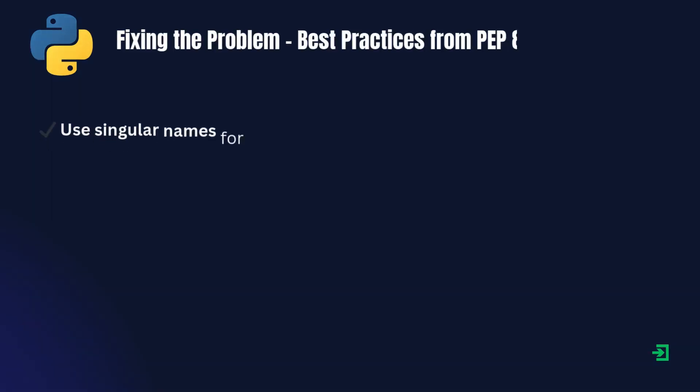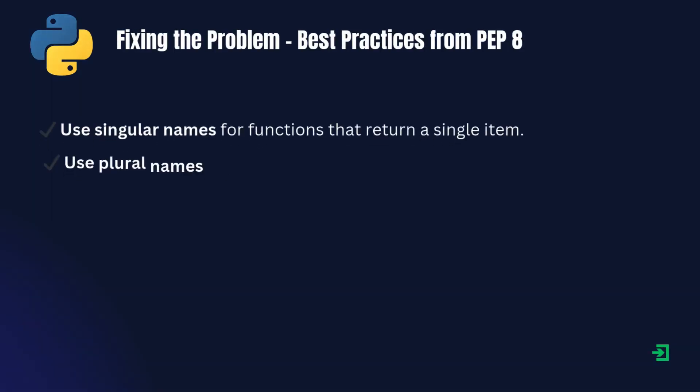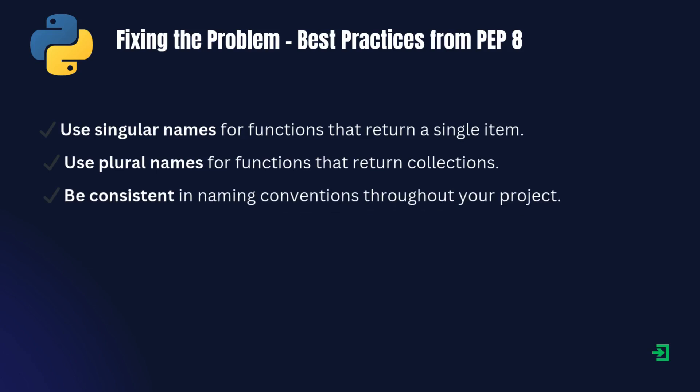To avoid confusion, always follow these best practices from Python style guidelines. If a function returns a single item, name it in the singular form. If it returns a list or collection, use the plural form. And most importantly, stay consistent throughout your codebase.